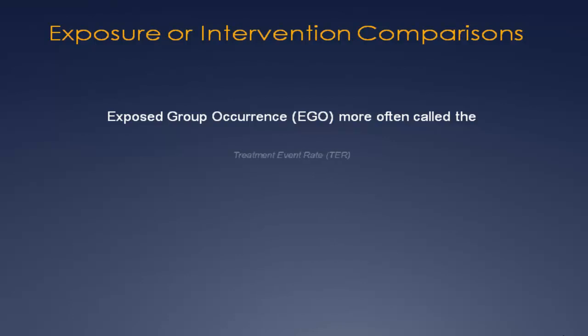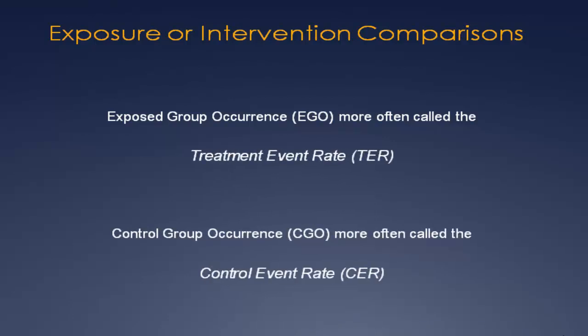Let's review the absolute risk a bit more. It's the difference between the control event rate and the treatment event rate — also called group occurrence in some studies. We'll use TER (treatment event rate) and CER (control event rate). The condition or outcome you're examining occurs at a certain rate in the standard treatment group versus the new treatment group. The absolute risk is the difference between those rates — also called risk difference or absolute risk reduction.